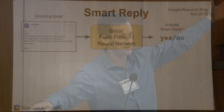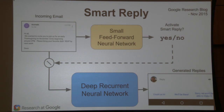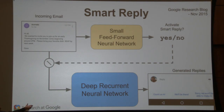One deployed application of the sequence-to-sequence model is replying to email on your phone — typing is painful. We have a feature where a small neural net first predicts whether a short response would be reasonable for a given email. If yes, we activate a much more computationally intensive model to predict what short responses would be plausible given the context. For example, for an email inviting someone to an early Thanksgiving and asking them to RSVP, the three suggested responses are: 'Count us in,' 'We'll be there,' or 'Sorry, we can't make it.' It's a pretty nice feature.